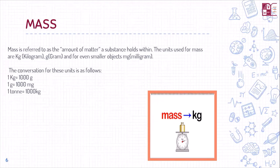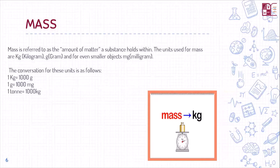Now I'm going to tell you about the basic measurements taken during experiments. For example, if we want to calculate mass, we want to know the amount of substance being used. Mass is basically the amount of matter any substance contains. The SI unit of mass is kilograms; however, other units can be used — for example, kilograms for heavier substances, grams, milligrams, or nanograms for smaller objects.